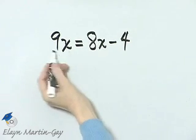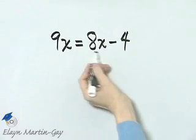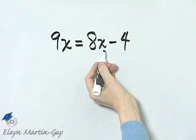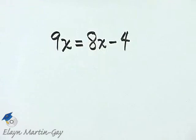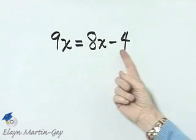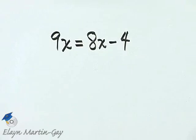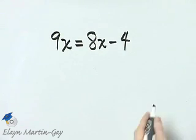Notice we have a term containing x on both sides. So what I'll do is subtract 8x from both sides, leaving this number by itself on the right side of the equation.